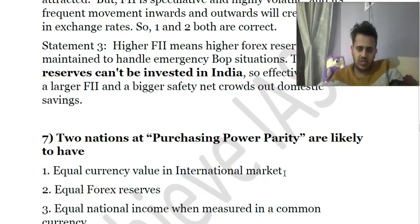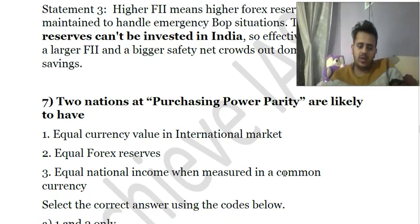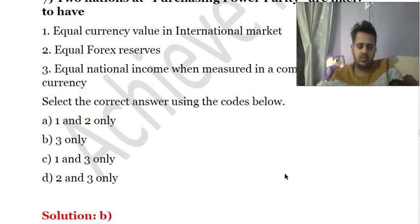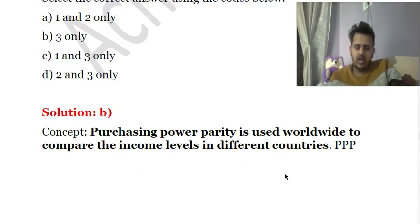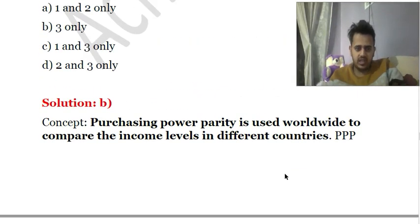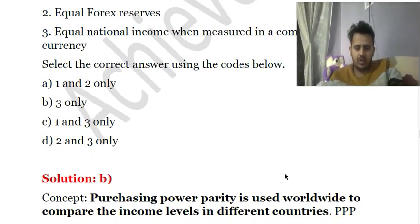Seventh question: Two nations at purchasing power parity are likely to have — (1) equal currency value in international markets, (2) equal forex reserves, (3) equal national income when measured in a common currency. The correct answer is (3) only. If both nations have the same purchasing power parity, it means they have equal income when measured in a common currency. Purchasing power parity is used to compare countries in terms of their income levels.